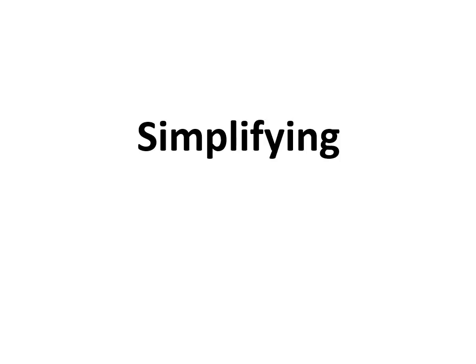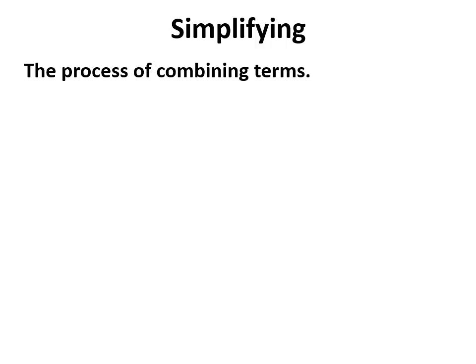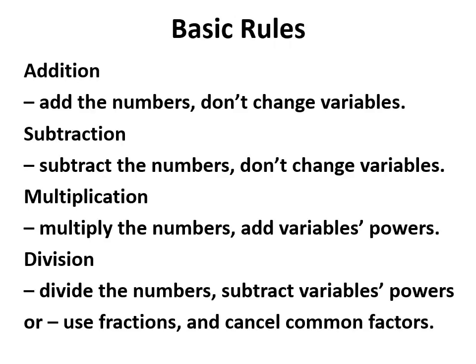This video looks at what we should do when we're asked to simplify, and what that means is that we combine those terms that we can combine. How might we do this? Well, we've got four processes at years 9 and 10: we can add terms, subtract them, multiply or divide. So we add the numbers, don't change the variables; subtract the numbers, don't change the variables.